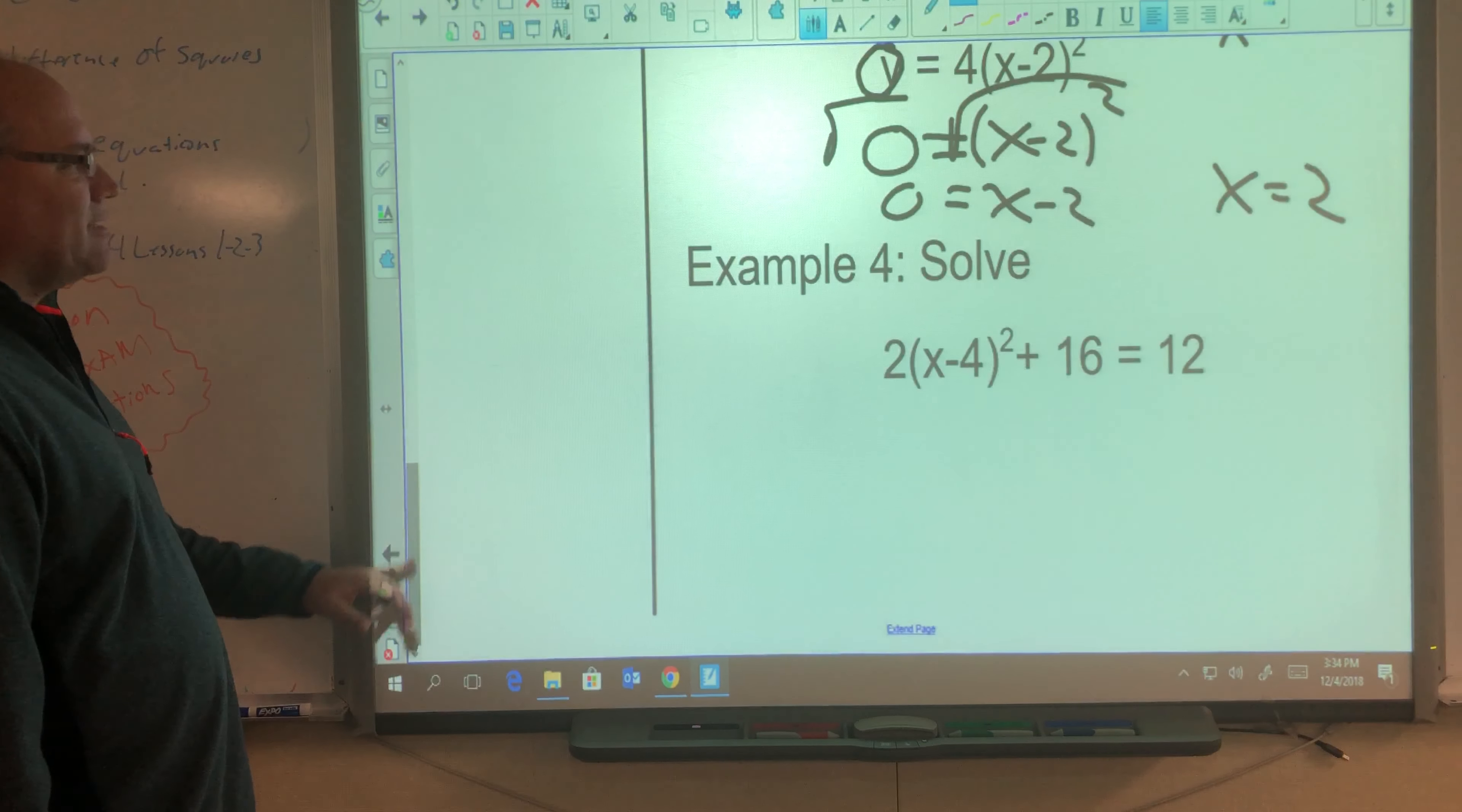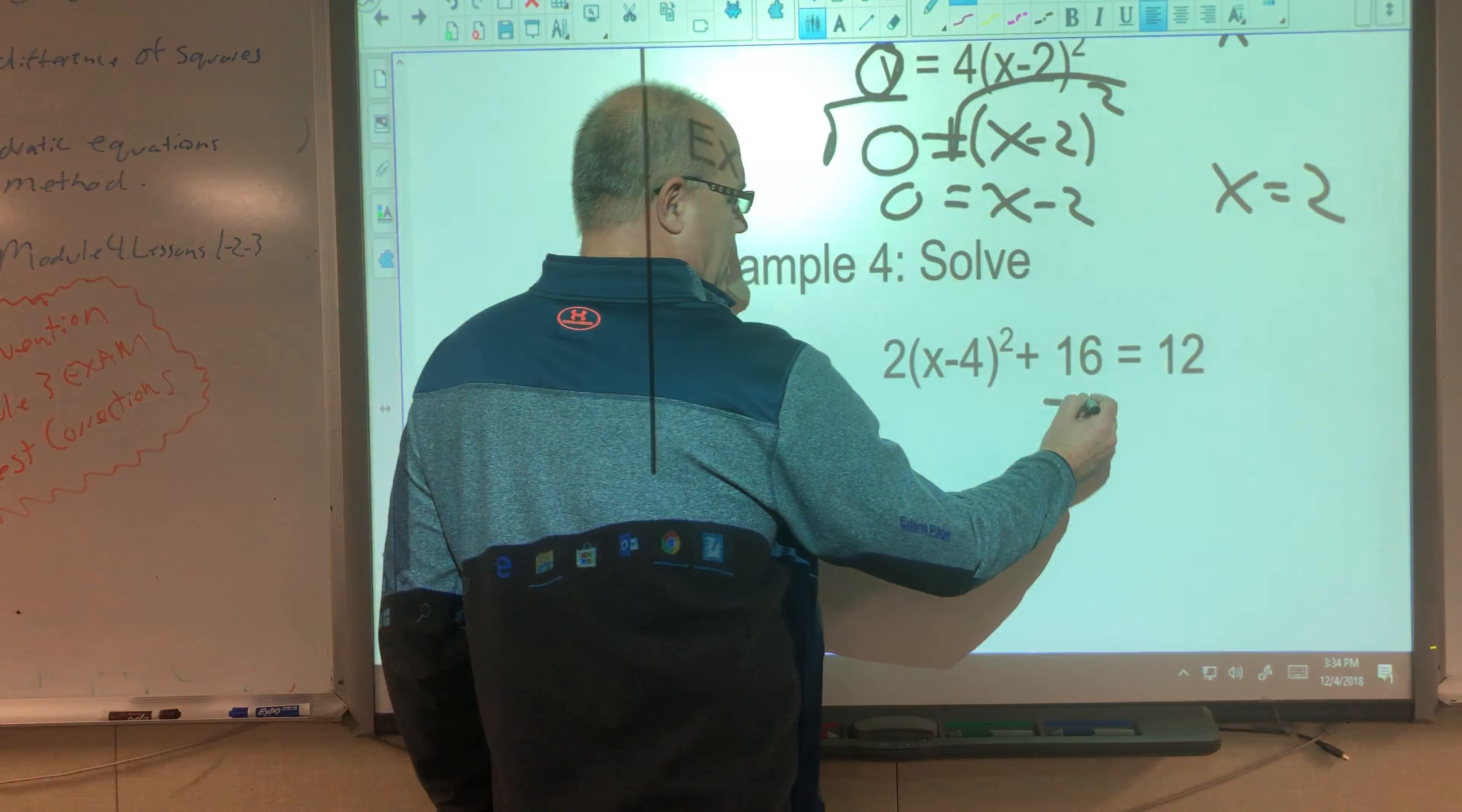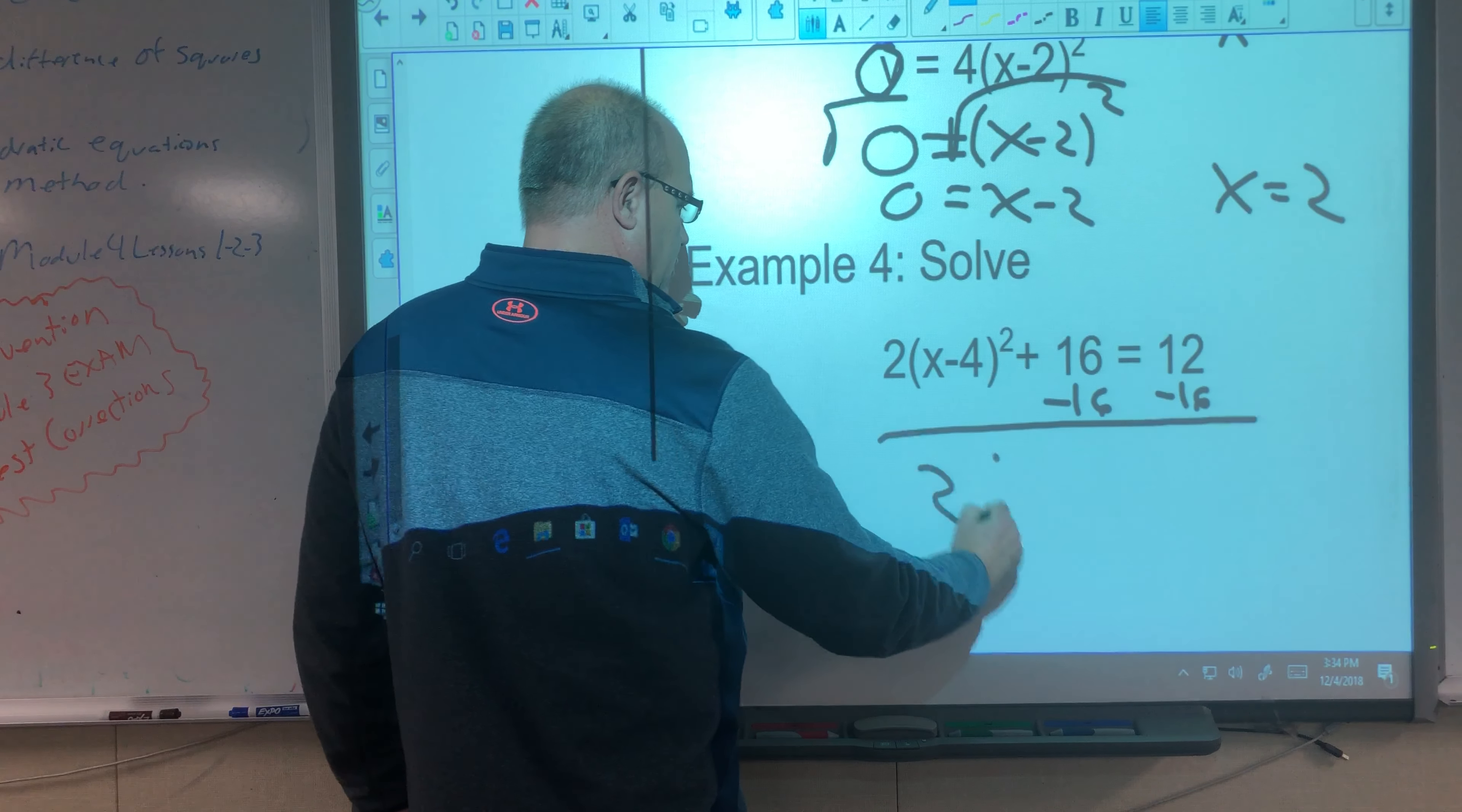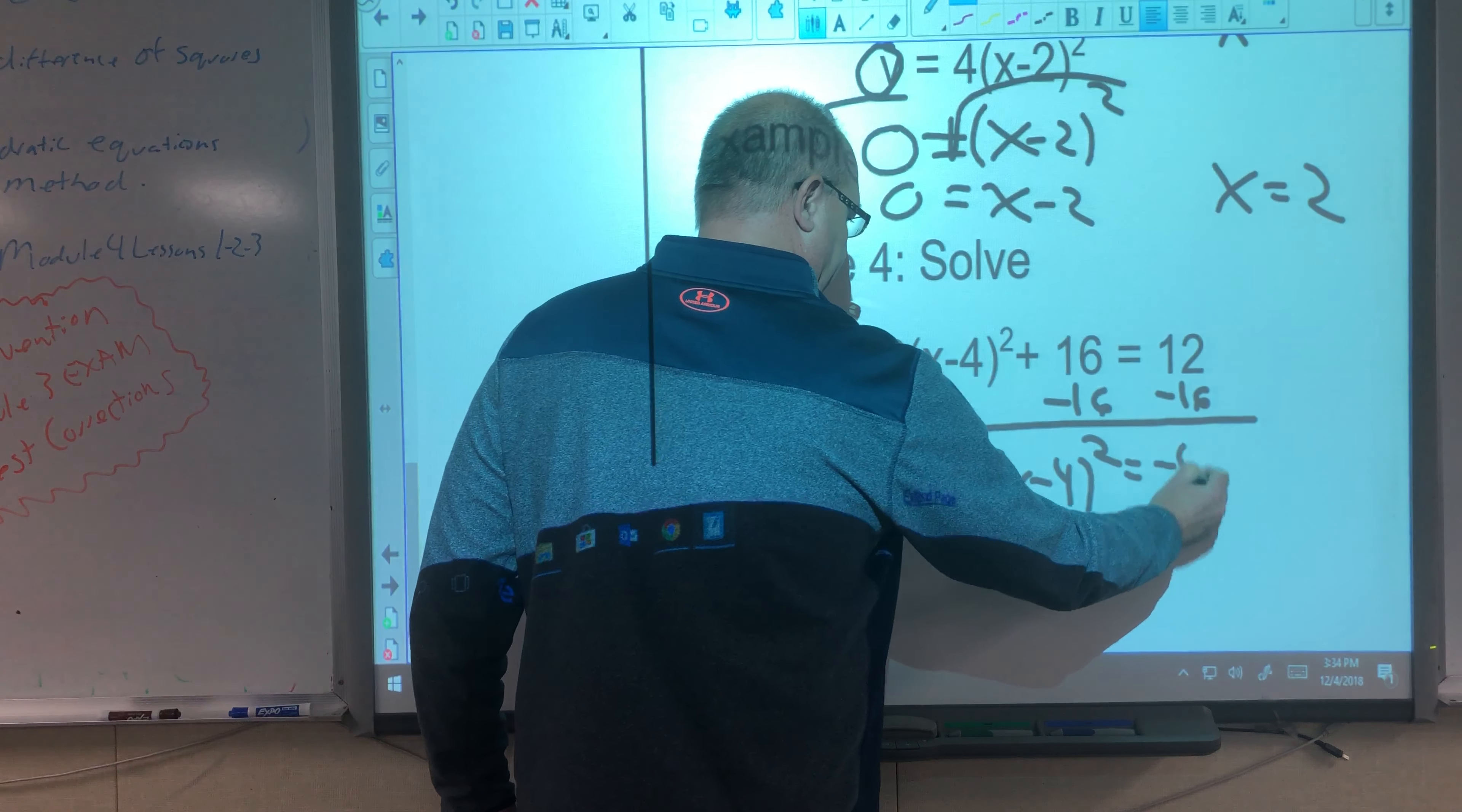Last example is to solve. This is going to be a special case here. We're going to subtract 16 from both sides. So we're going to get 2 times x minus 4 squared equals negative 4.